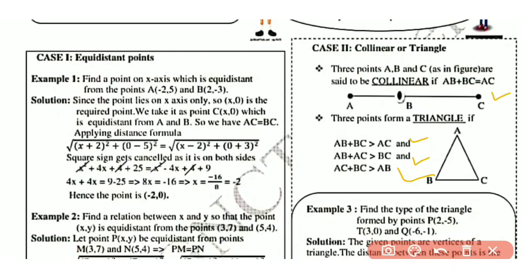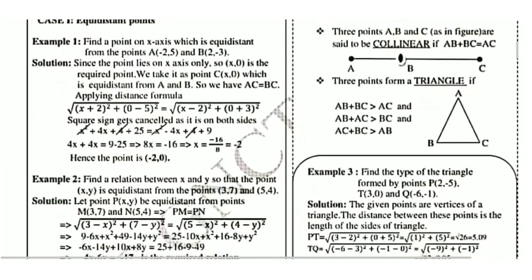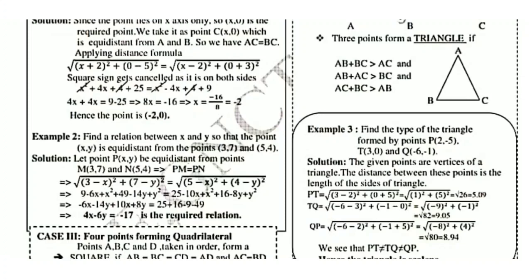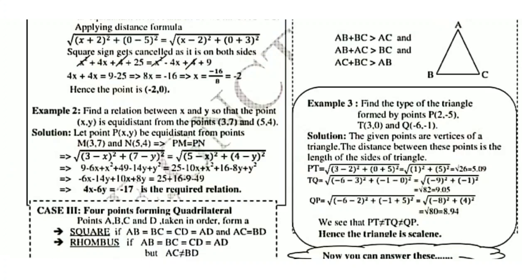Example: Find the type of triangle formed by the points P(2, −5), T(3, 0) and Q(−6, −1). The given points are vertices of a triangle, so the distances between them are the lengths of the sides. Using the distance formula: PT is approximately 5.09 units, TQ is approximately 9.05 units, and QP is approximately 8.94 units. Since PT ≠ TQ ≠ QP, all sides are of different measure, so the triangle is a scalene triangle.